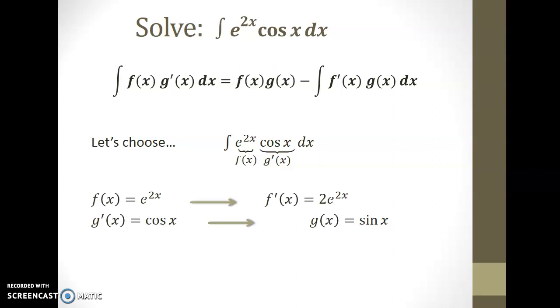Once we've made the choice to let f be represented by e to the 2x, we need to find its corresponding term f prime. Notice 2e to the 2x is the result of this derivative, with the constant 2 being the result of a chain rule. If g prime is cos x, then its antiderivative g is sin x. Here's what we get once we apply these different terms to the integration by parts formula.